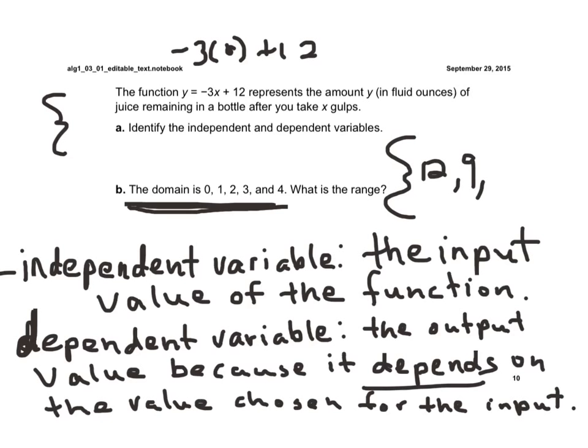If I plug 2 in, negative 3 times 2 is negative 6 plus 12 is 6. Negative 3 times 3 is negative 9 plus 12 is 3. And then negative 3 times 4 is negative 12 plus 12 is 0.